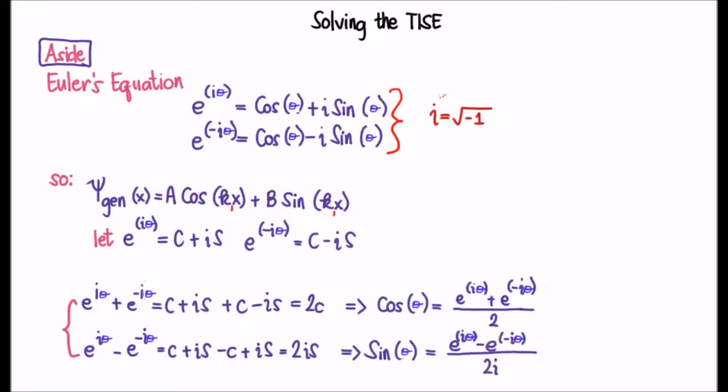I think this is pretty neat and certainly the first time I saw this I was really intrigued by it. So let's see if we can rewrite the general solution or one of the general solutions to the time independent Schrodinger equation using these expressions for cosine and sine in terms of complex exponential functions.